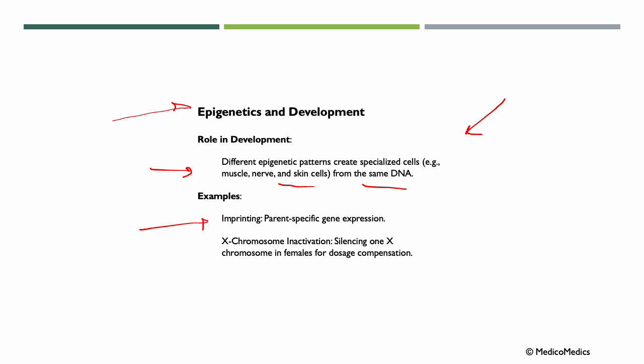Some examples could be imprinting, which is parent-specific gene expression. Some genes are expressed only from one parent's allele while the other is silenced. For example, we have insulin-like growth factor 2, which is typically expressed only from the paternal allele, while the maternal copy remains inactive. This parent-specific gene regulation is crucial for normal growth and development.